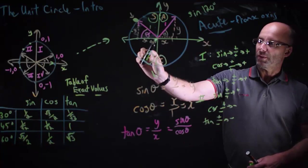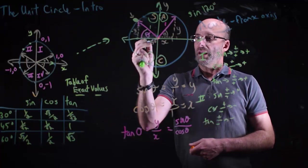Repeating the process in quadrant three, you would see that only tan is positive there. And in quadrant four, only cosine is positive. That's a brief introduction to the unit circle.